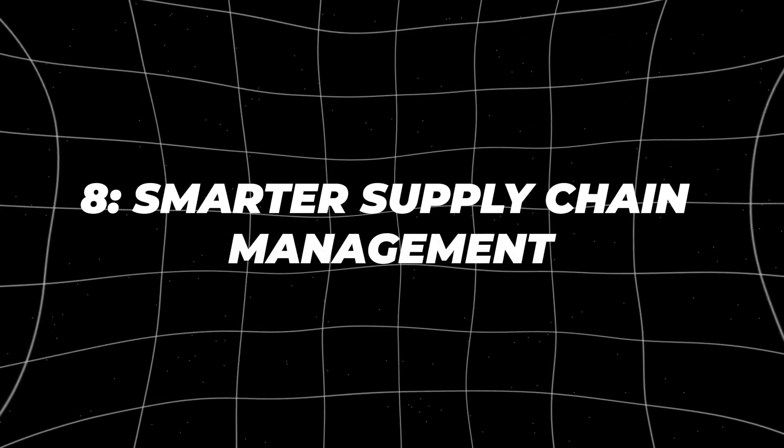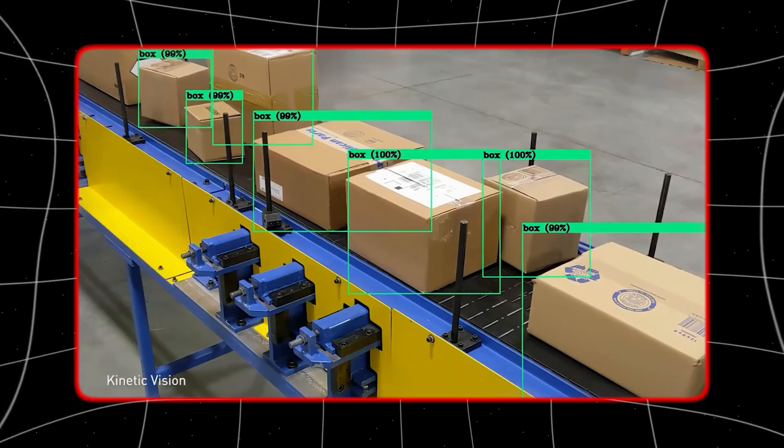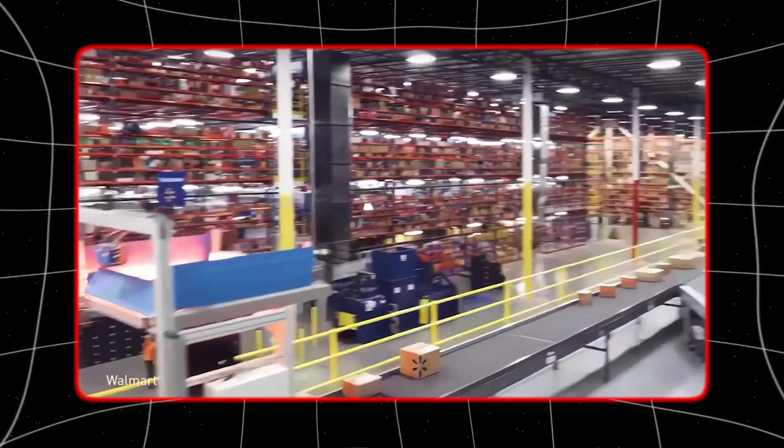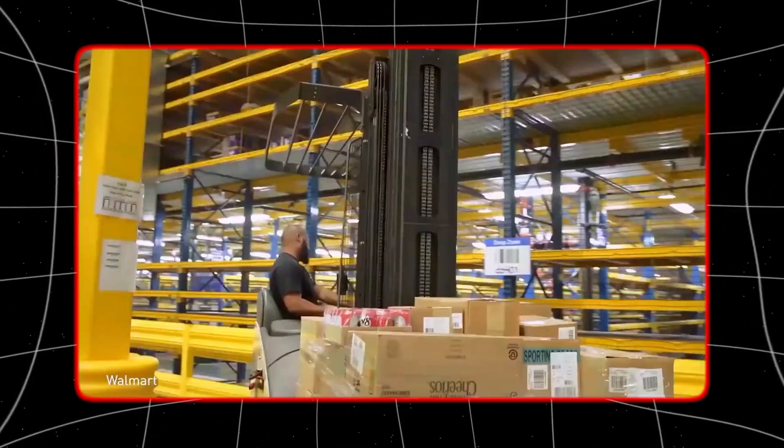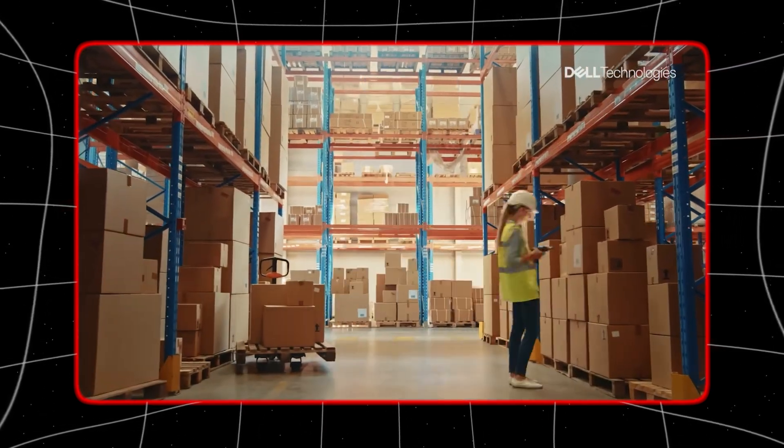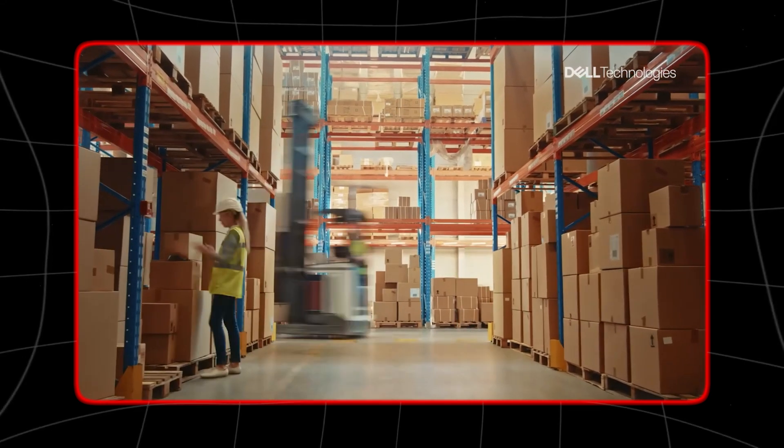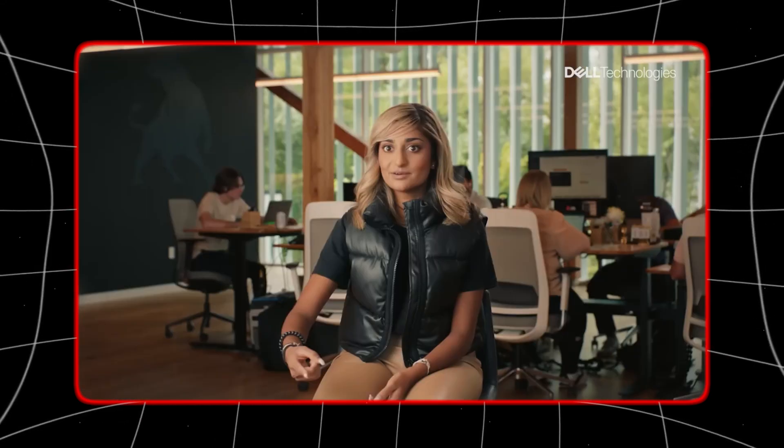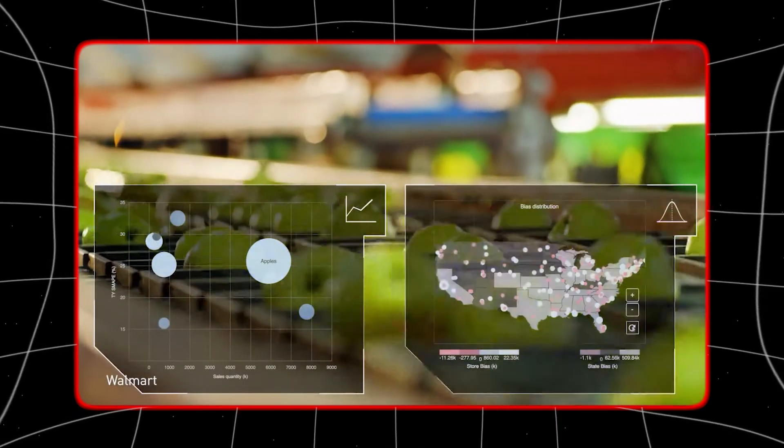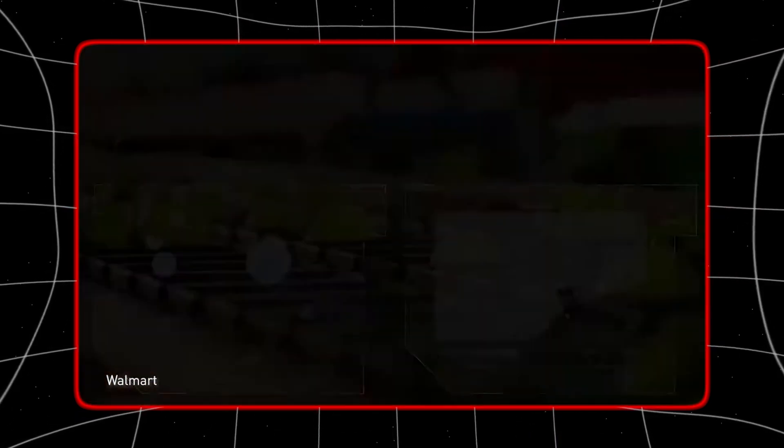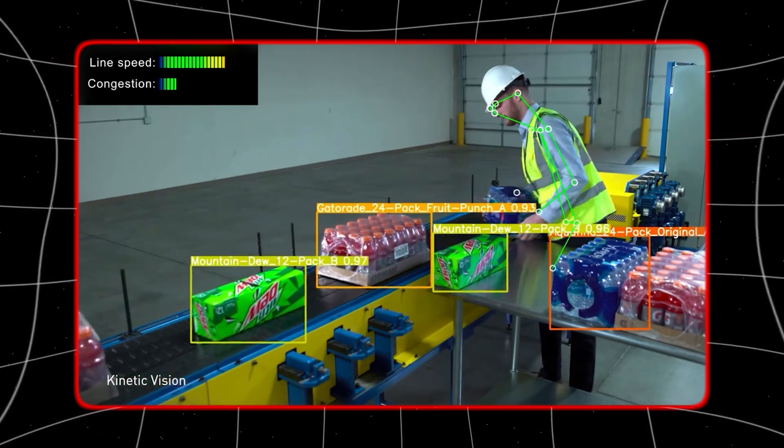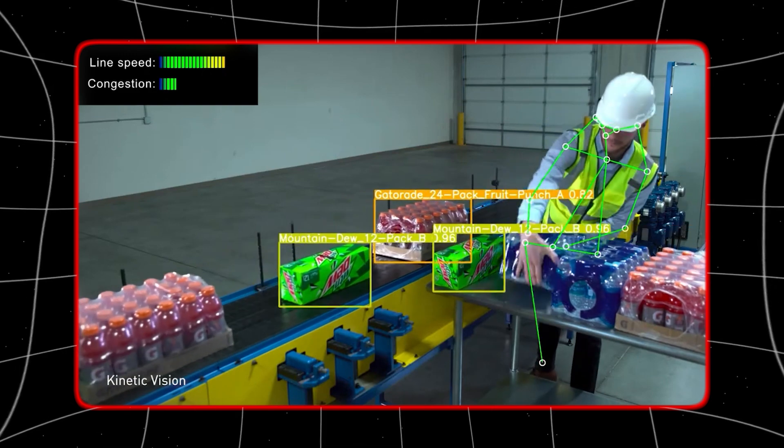Number 8. Smarter Supply Chain Management. Quantum-enhanced generative AI will revolutionize supply chain management by making it smarter and more efficient. Traditional supply chains often struggle with predicting demand, optimizing inventory levels, and streamlining logistics. However, quantum-enhanced generative AI can address these challenges by leveraging quantum computing power and advanced algorithms to generate insights and solutions beyond the capabilities of classical computing.